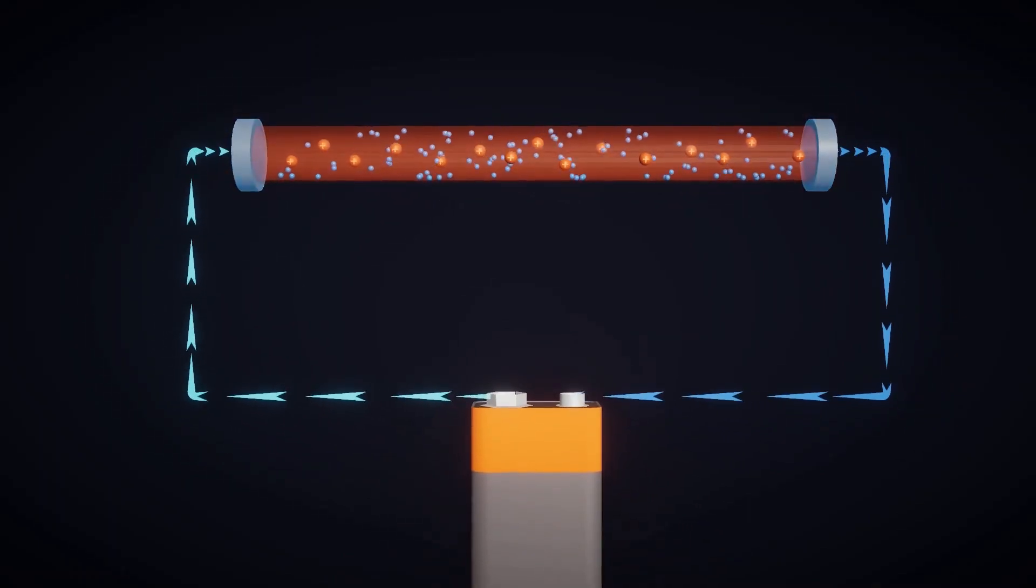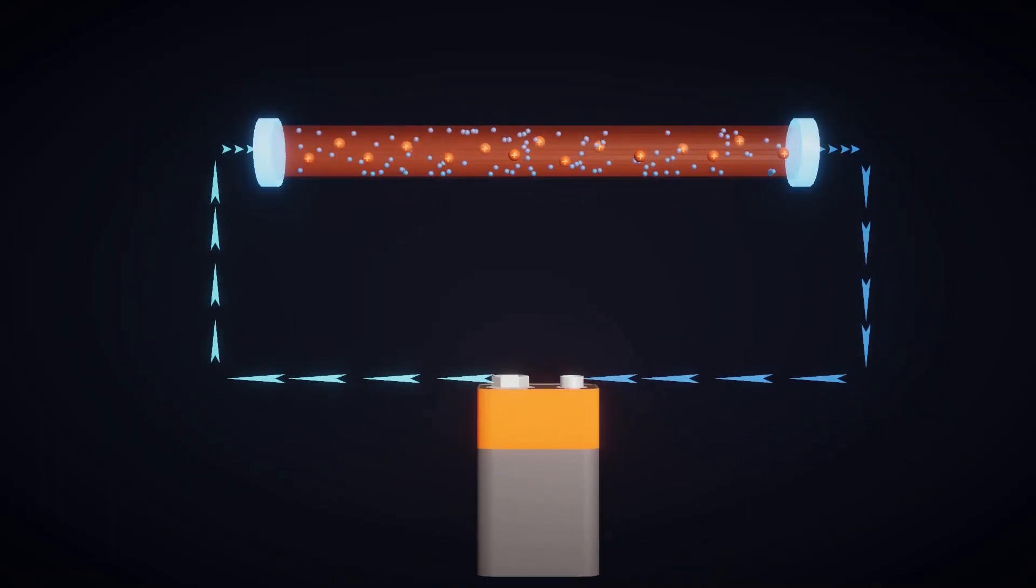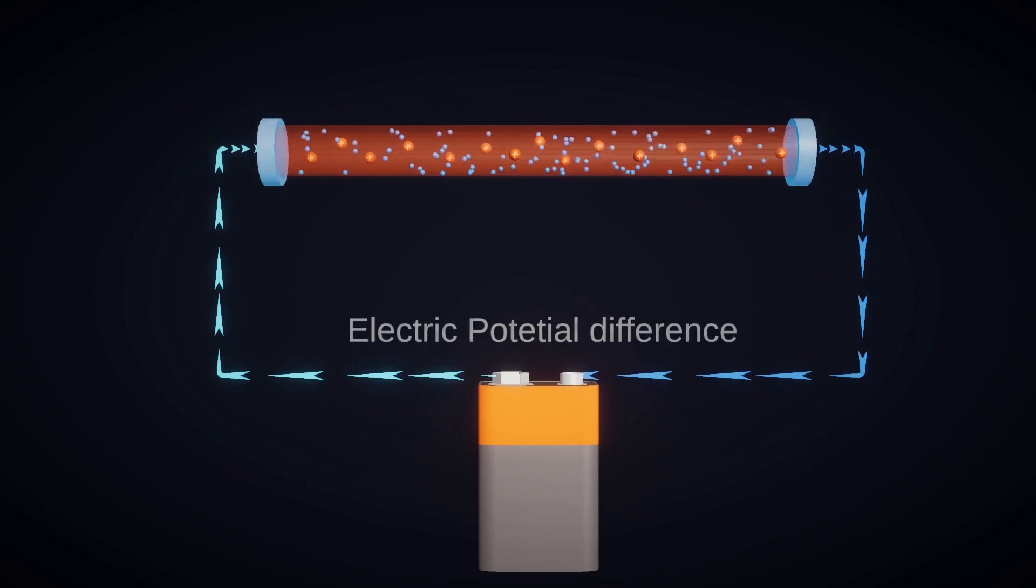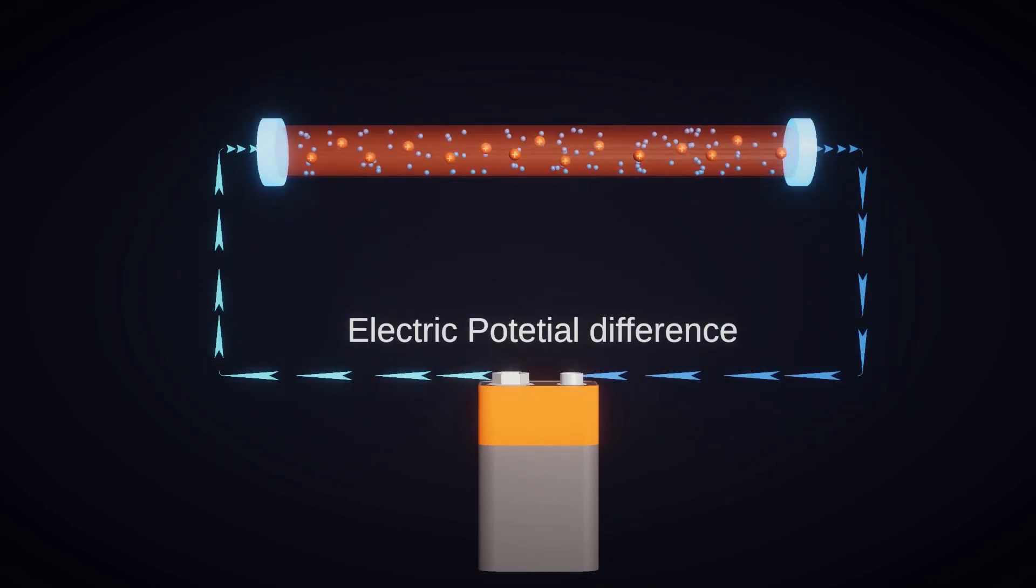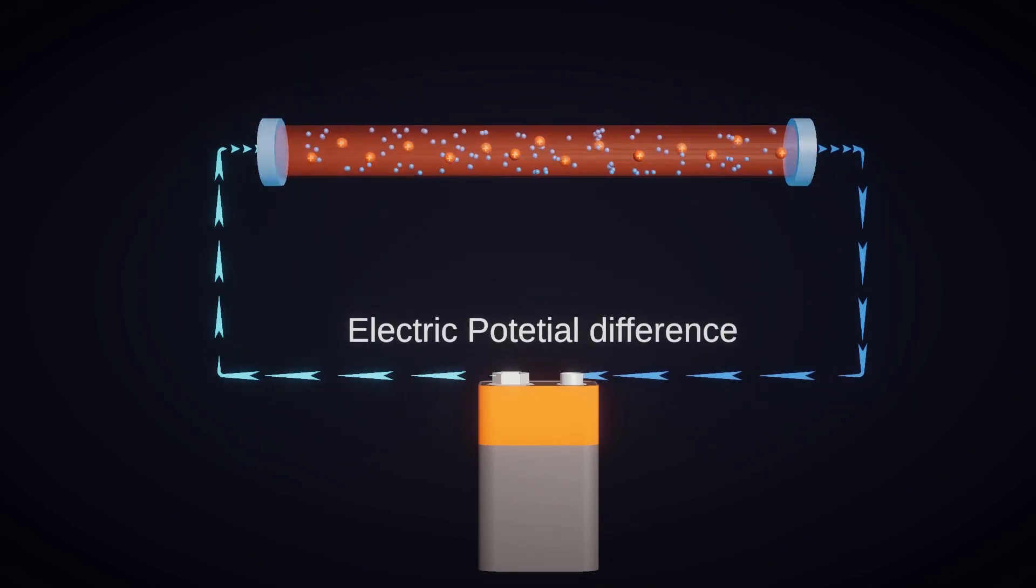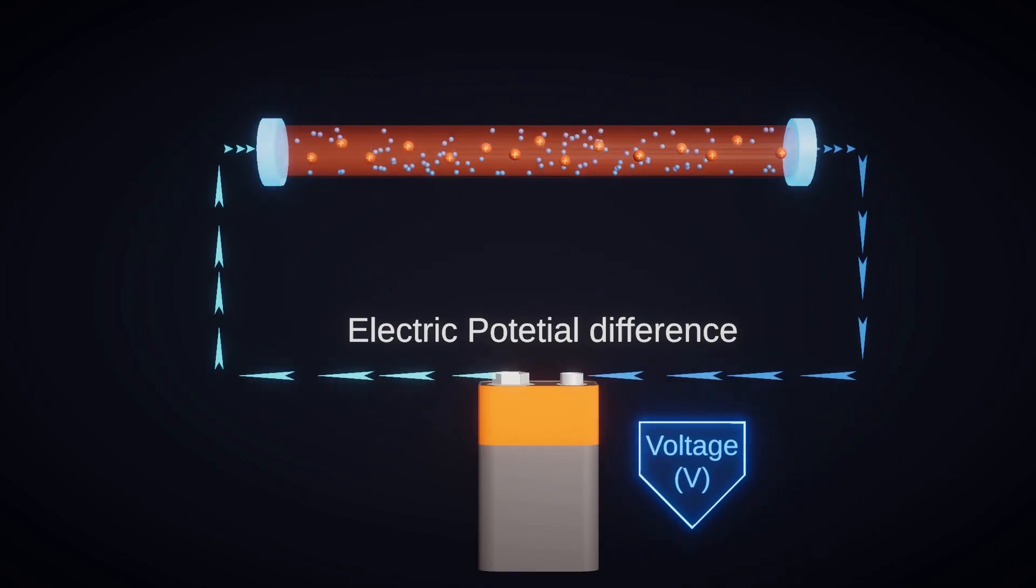To make electric charges flow, an external force is required, which we call electric potential difference. Electric potential difference is also simply called voltage.